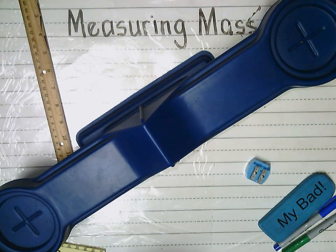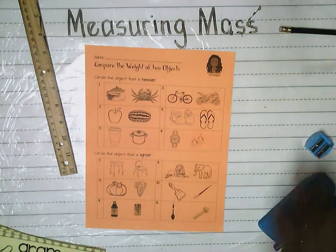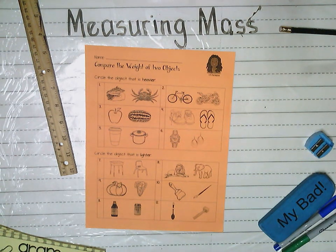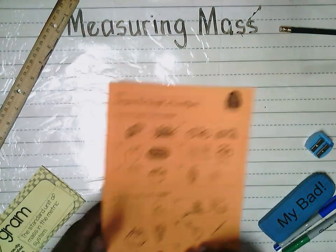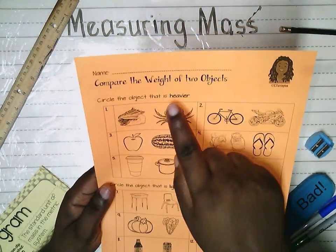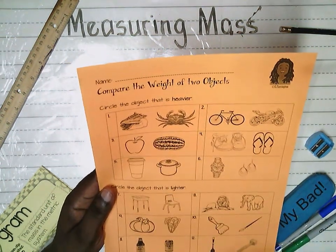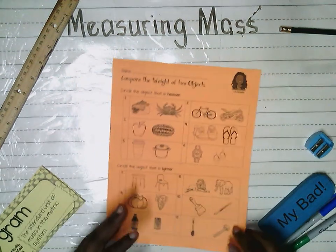This balance scale tells us which object is heavier or lighter in comparison. In our worksheet today, we're going to compare — remember we looked at this word compare a few lessons back, when we did the alligator for greater than or less than. So we are going to compare the weight of two objects, and we're going to circle the object that is heavier.